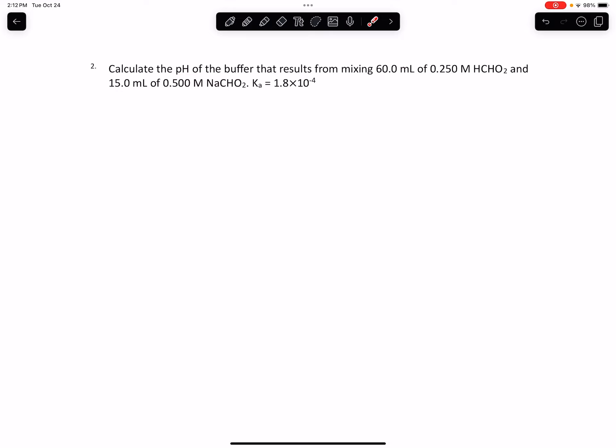Before using the Henderson-Hasselbalch equation, we need to first calculate the new concentration of the acid in the new volume (60 plus 15), and do the same for the new concentration of the base in the new volume. To do that, we can make a table.